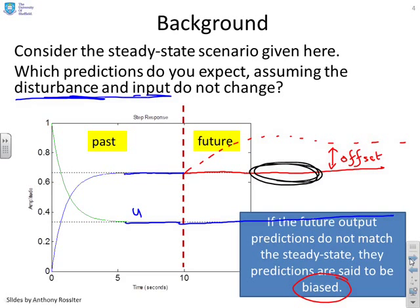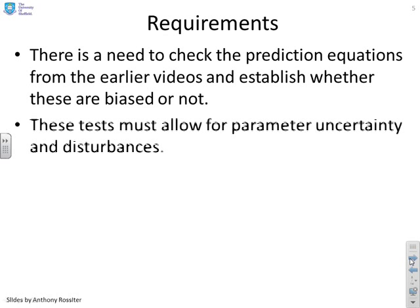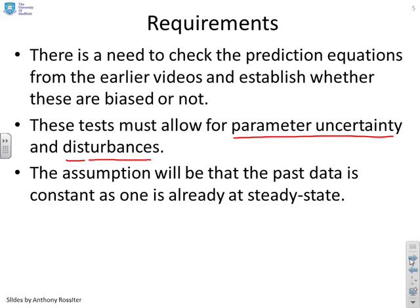We're going to look at the earlier prediction equations from the earlier videos and establish whether these are biased or not — whether they give the correct steady state. These tests must implicitly allow for both parameter uncertainty and disturbances, since both will be present in practice. The assumption will be that we're already in steady state, and we ask: does our model give us the correct future predictions?